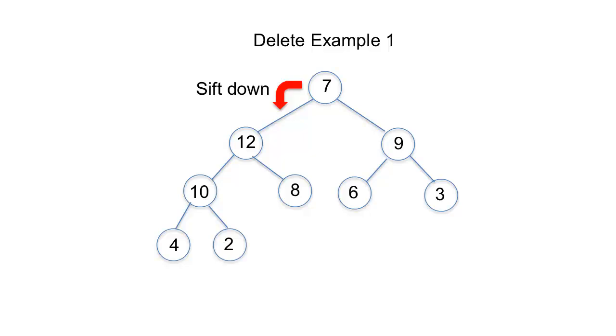Starting the sift down process, the largest of the values 7, 12 and 9 must occupy the top. To find the largest, the children are first compared. 12 is greater, so it is then compared with 7. Since it is greater, they switch places, and the sifting down of 7 continues one level below. Here, between the children 10 and 8, 10 is greater, and it is also greater than 7 itself, so they trade places. Finally, the children 4 and 2 are compared, and the greater child 4 is compared with 7. But since 4 is not greater, there is no change in 7's position, and the sift down process comes to an end.